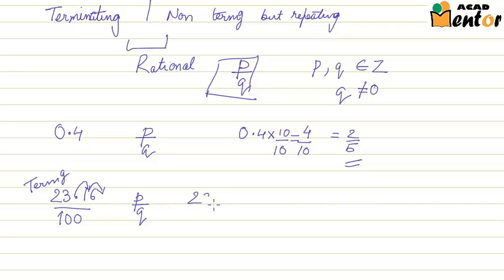So this becomes 2316 upon 100 and then you can divide this and this comes out to 579 by 25 in its smallest form.